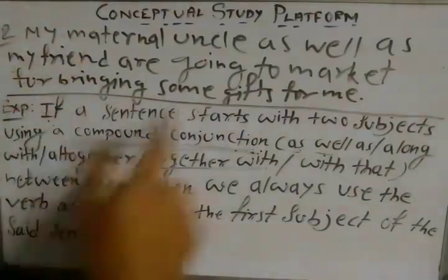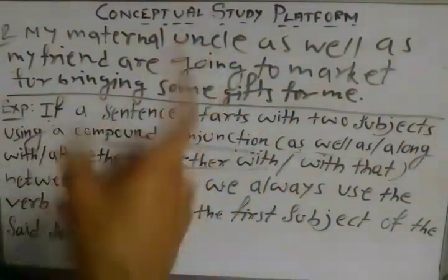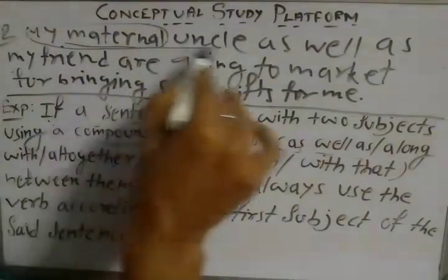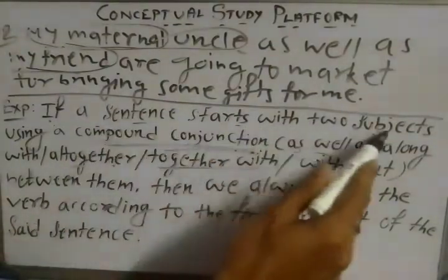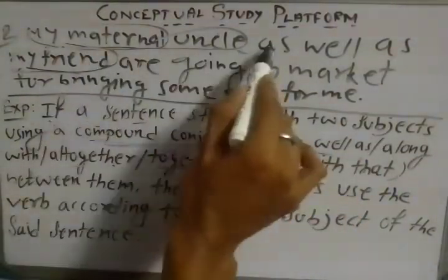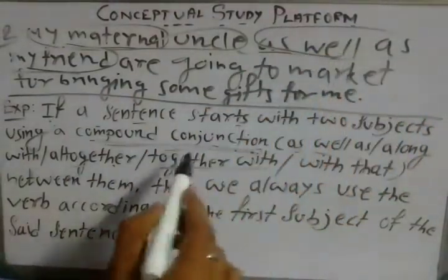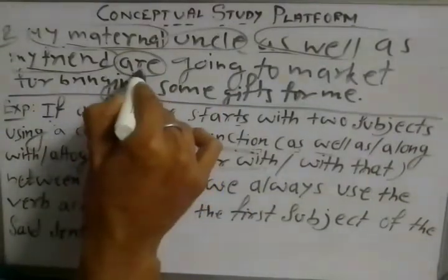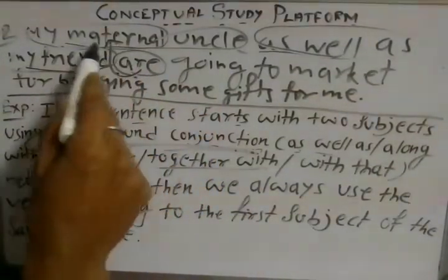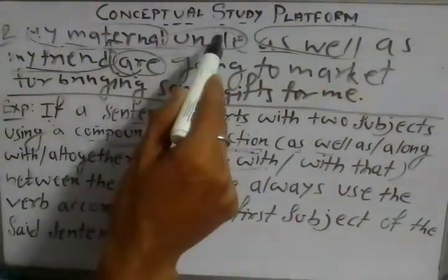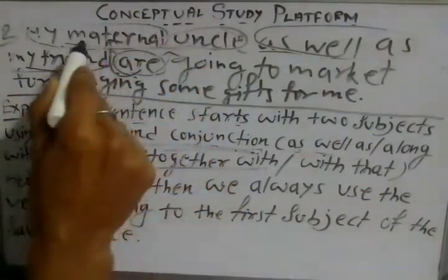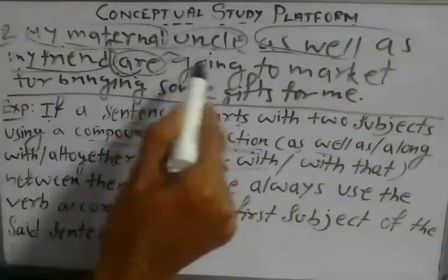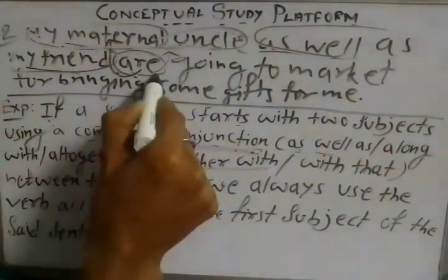The sentence is absolutely incorrect. As we know, if a sentence starts with two subjects — 'my maternal uncle' and 'my friend' — using a compound conjunction 'as well as', then the verb must always agree with the first subject. The first subject is 'my maternal uncle', which is a singular subject, so the verb should be singular.